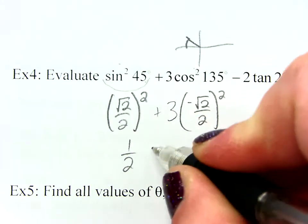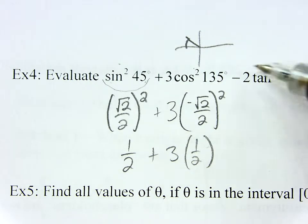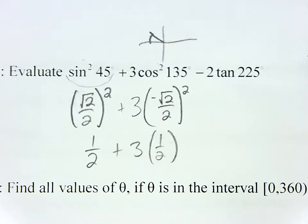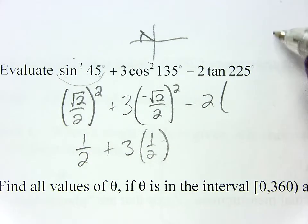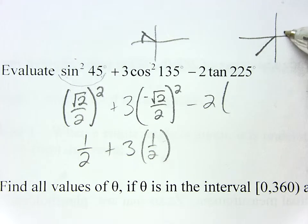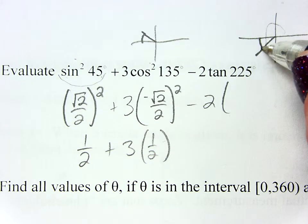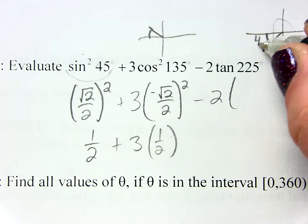So, okay, I'll write it. A half plus 3 times a half. And now we just have to do this last one minus 2 times the tangent of 225. So 225 is going to put me in the third quadrant. So to find my reference angle, I'm going to do 225 minus 180. And that gets me 45 again.